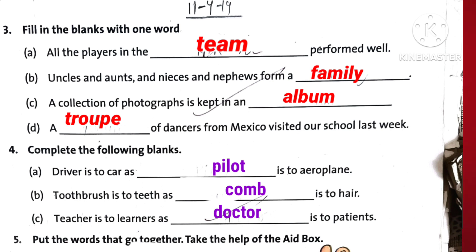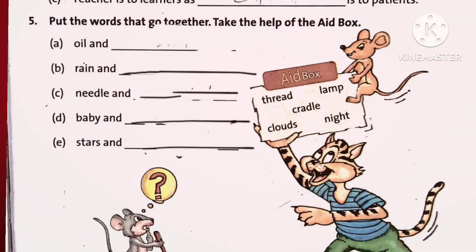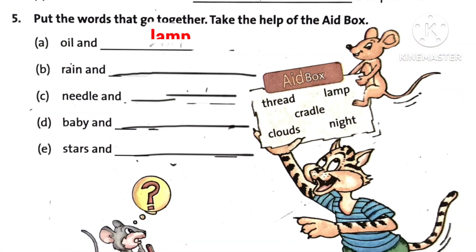Now number 4 is pairs: Driver is to car as pilot is to aeroplane. Toothbrush is to teeth as comb is to hair. Teacher is to learner as doctor is to patient.